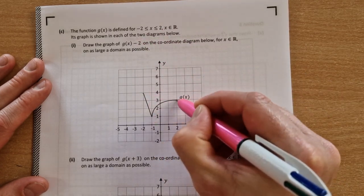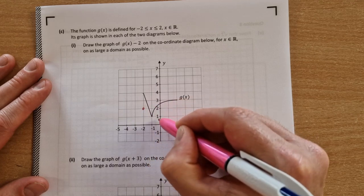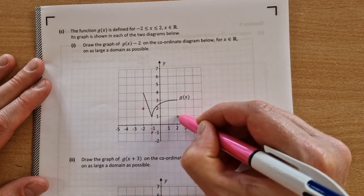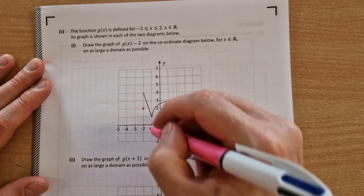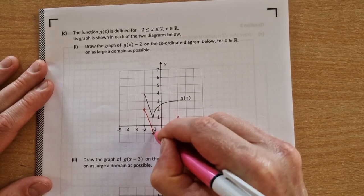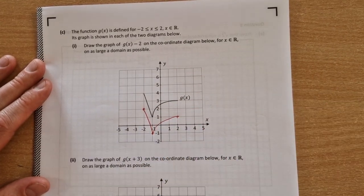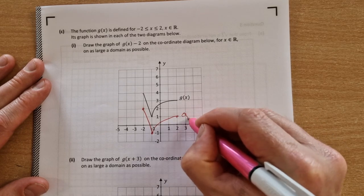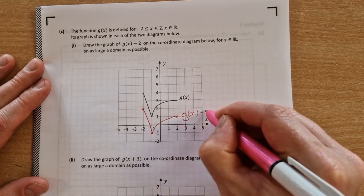So we can take our three main points here, move them down 1, 2, 3, all of them down by 2 units, and then you join the dots just in the same shape as the function. So that is the g of x minus 2.